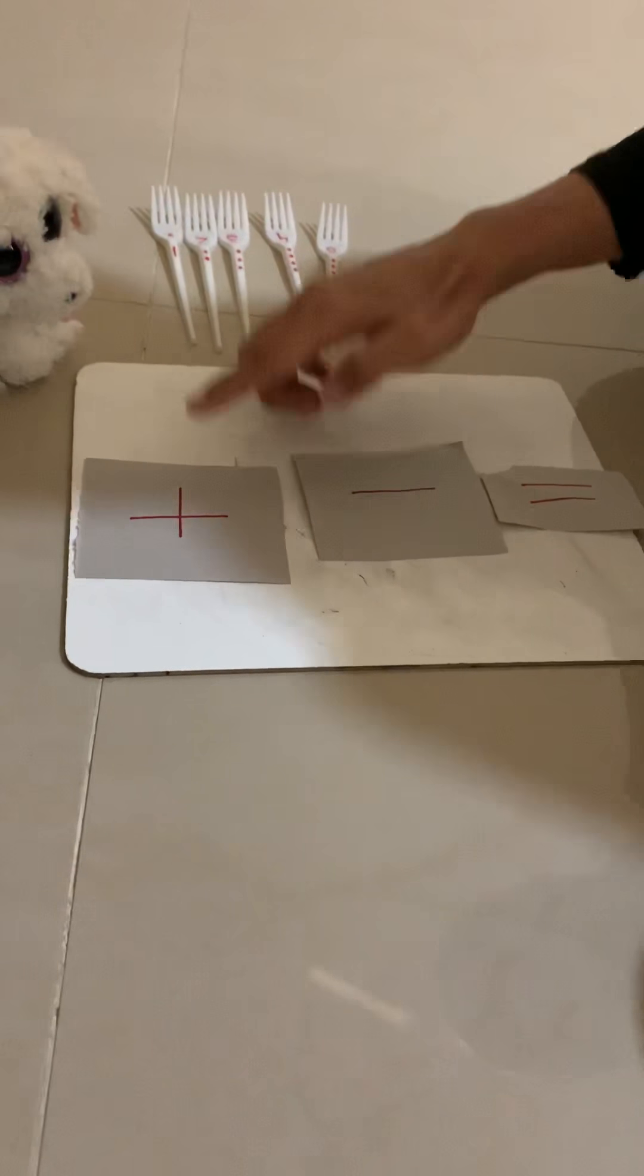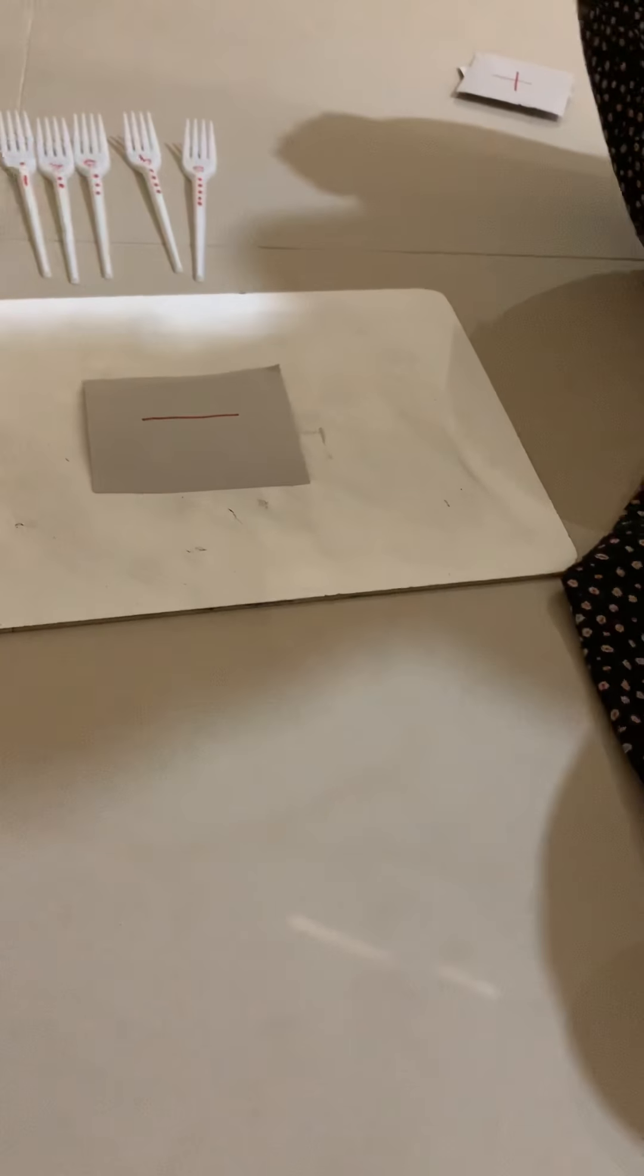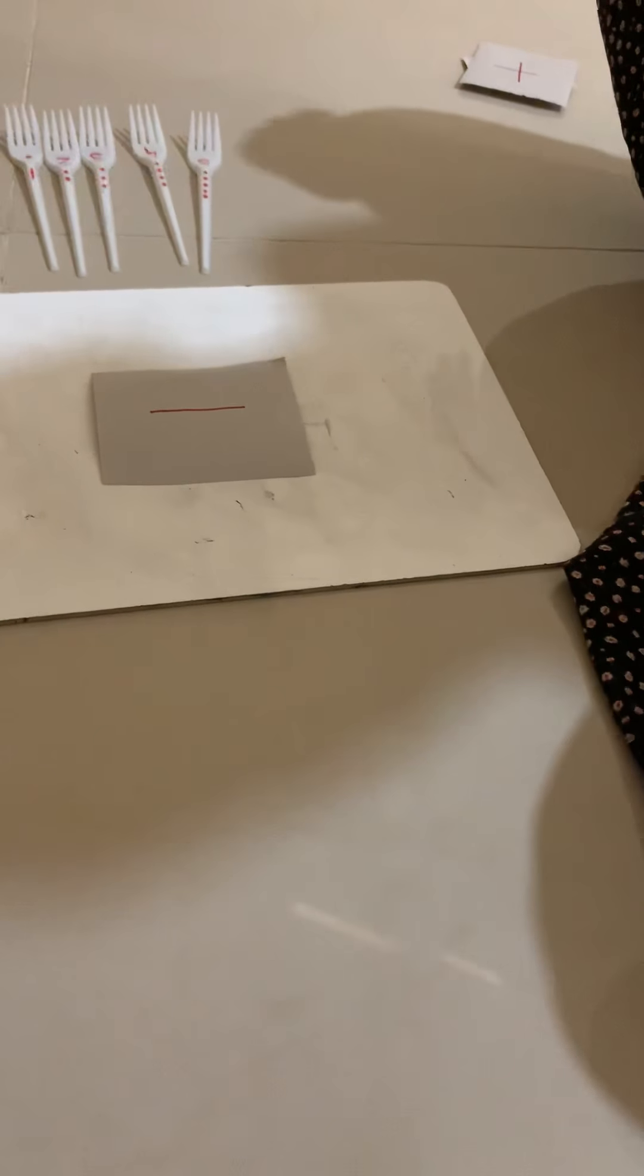What sign do you see here? This is adding, so that means all together. When we are going to be adding two things, we say all together. What is this sign? This is take away, or subtraction we can call it. And this sign is equals to. When you get your two numbers and then you get your answer, you write it after the equals sign.